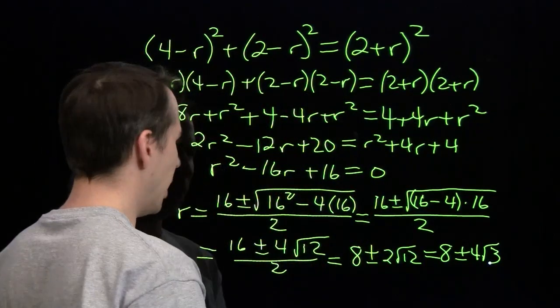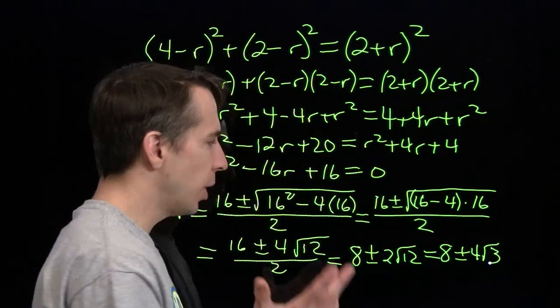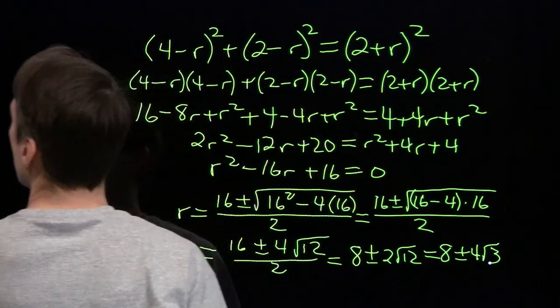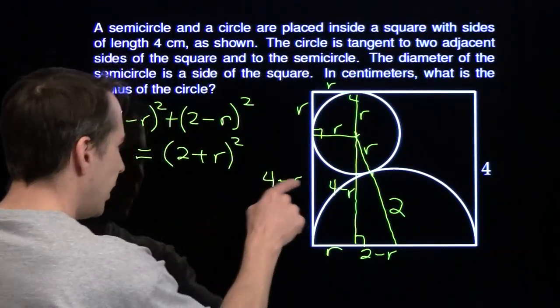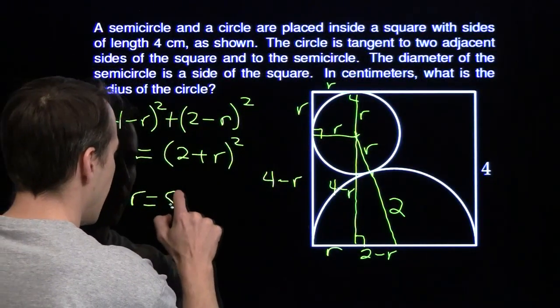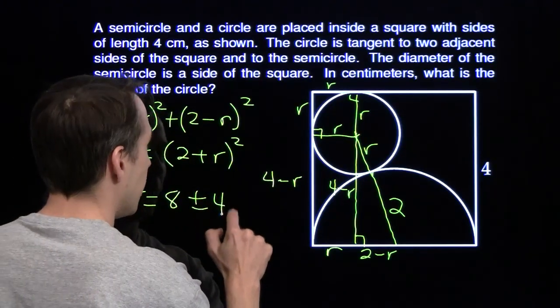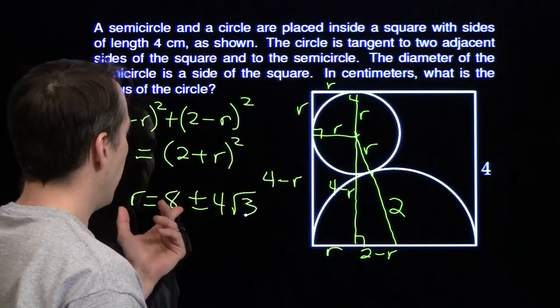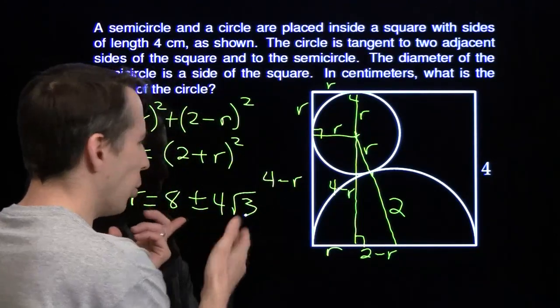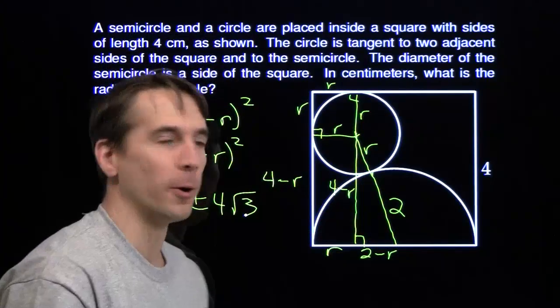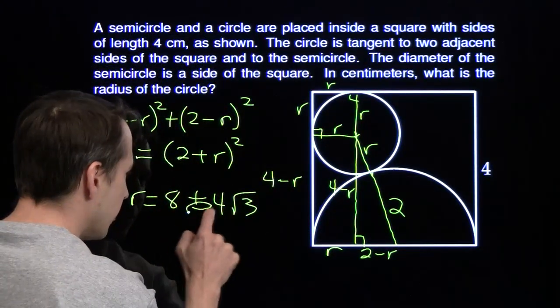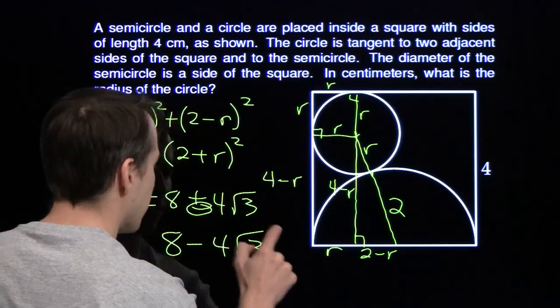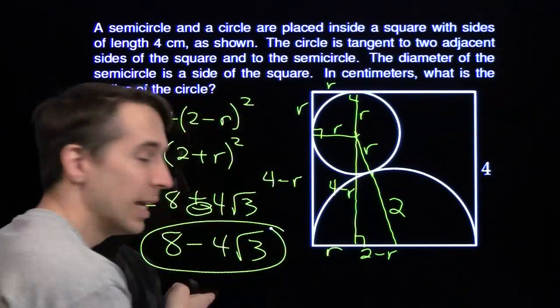What are we doing in this problem? I got so lost in this algebra, I forgot what the question is. But at least I know what R is. I know that R is 8 plus or minus 4 times the square root of 3. Well, it can't be 8 plus 4 times the square root of 3 because the radius isn't bigger than 4. So it must be the negative one that we want. Our answer is 8 minus 4 times the square root of 3. And we're done.